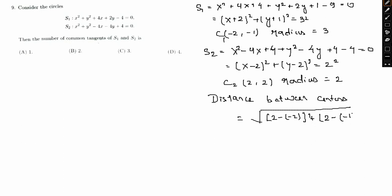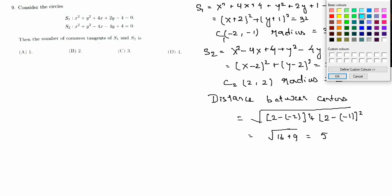So this is nothing but 16 plus 9 or 5. So 3 and 2, so radius distance between them will be 5. So let me just show you how this figures would actually look like here. So that way, you can have a clear vision.